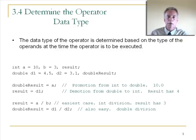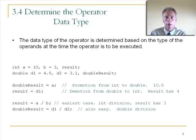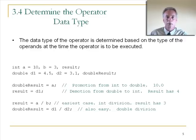A demotion is when data may be lost. If D1 is a double holding 4.5 and we assign it to an int variable 'result', the .5 is thrown away — result gets 4. This is called an implicit demotion because the programmer hasn't explicitly acknowledged it. The compiler will generate a warning at compile time: data may be lost. The code will compile and run, but result will hold 4.